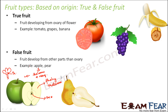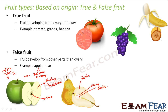In pear, the enlarged thalamus is also the edible part. The core at the center with seeds is the ovary. Inside the ovary you have seeds. Both the structure of apple and pear are very similar — this outer portion is the thalamus, and the fruit is formed by thalamus plus remains of ovary.